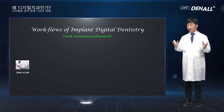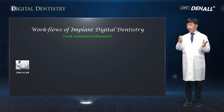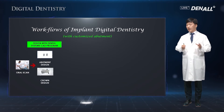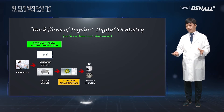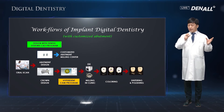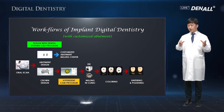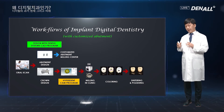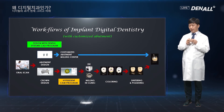If providing implant prosthesis to a patient using a customized abutment: an oral scan is taken, and the crown and customized abutment are designed at the same time. Within the dental clinic, the crown is milled, coloring is done, centering is done, and the final process is conducted. If you send the designed abutment data to a professional milling center, the abutment is adjusted within three days and sent back to the dental clinic. In a lot of cases, the crown and abutment fit is very good.